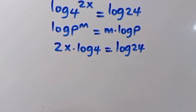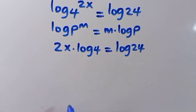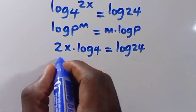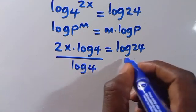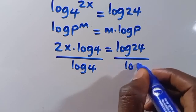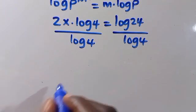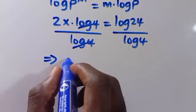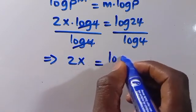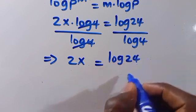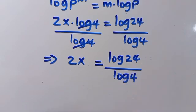So let's divide through by log 4 to get the value of x. When we divide through by log 4, it will cancel on the left side. We have 2x equals log 24 over log 4.